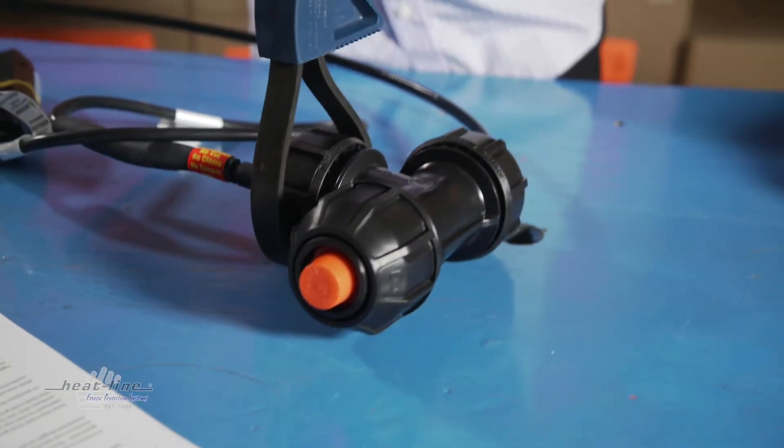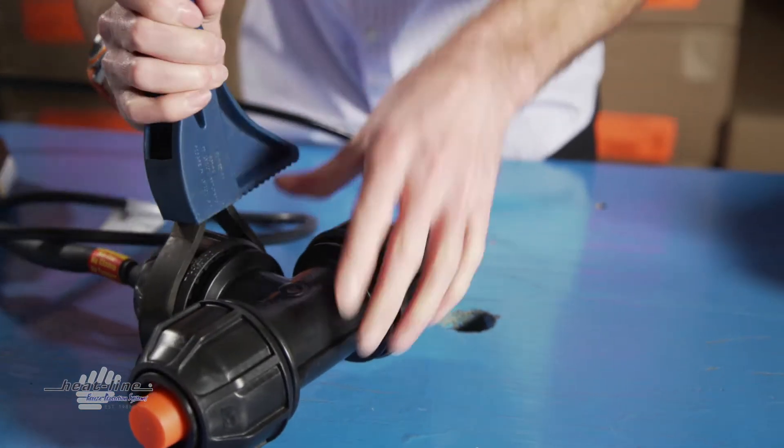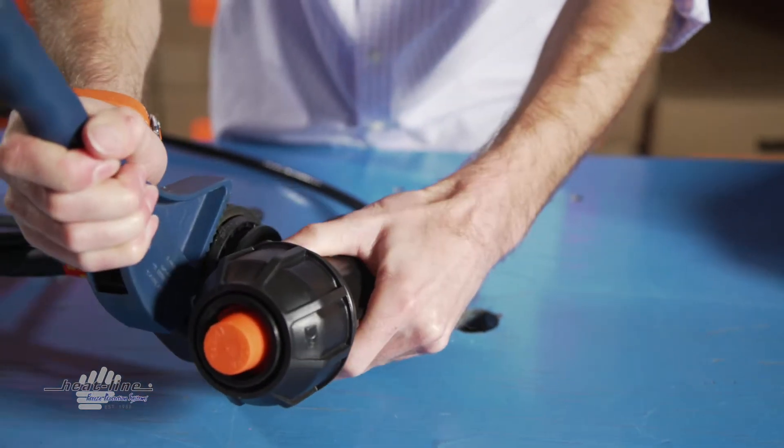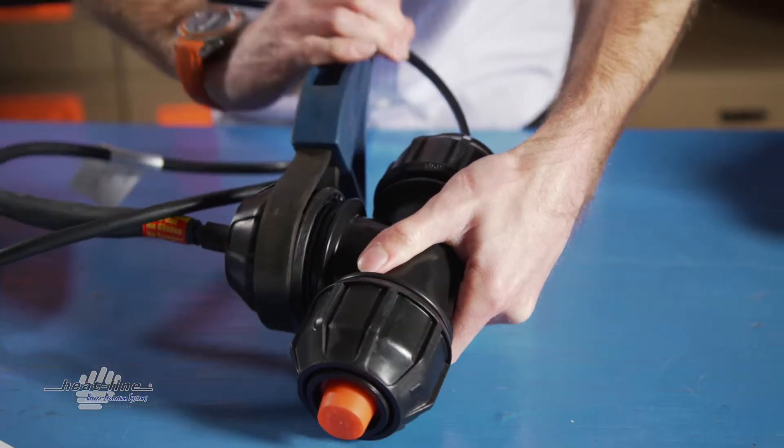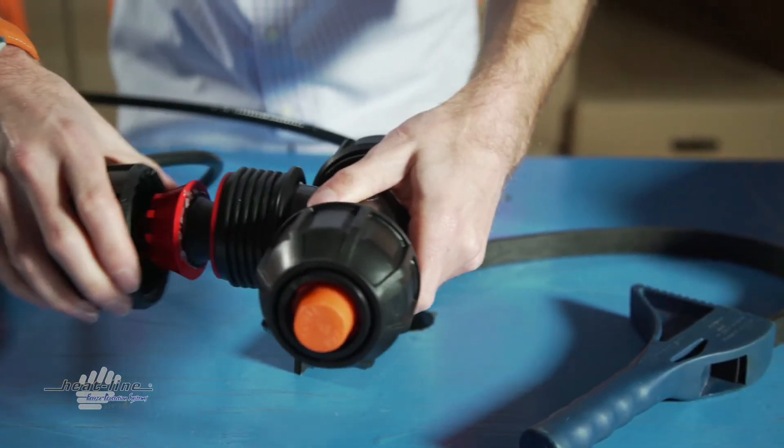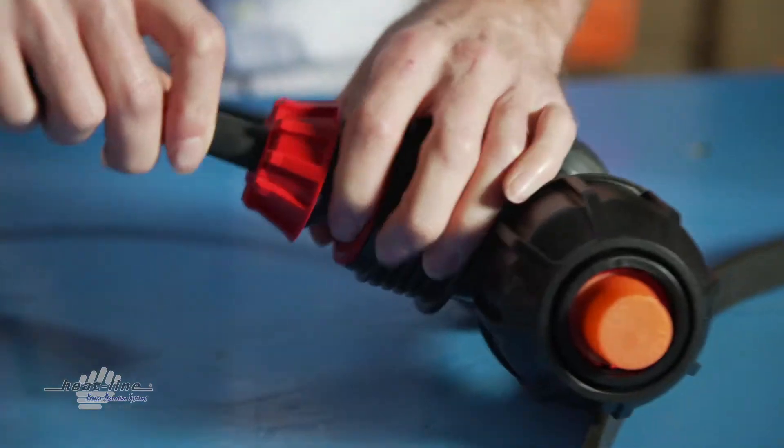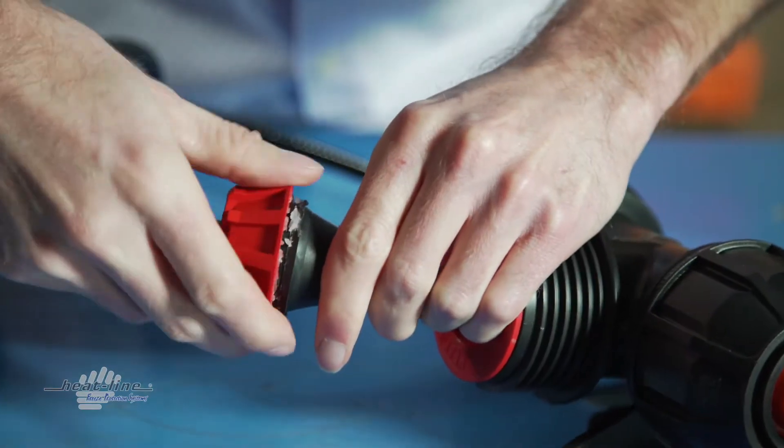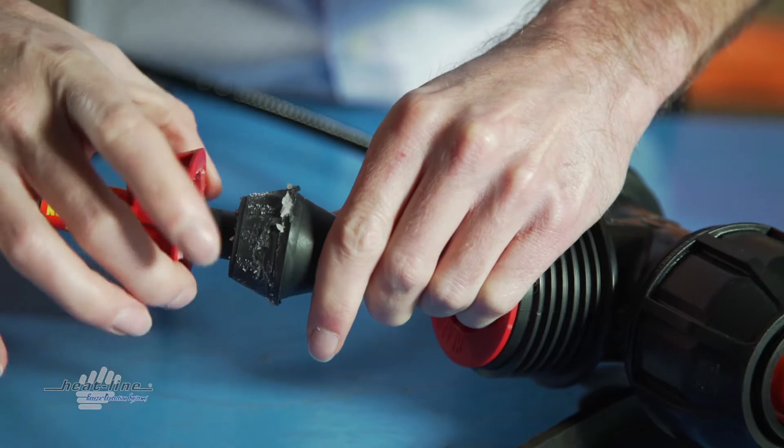Using the wrench of preference, loosen the large nut that compresses the heat line grommet. Next, pry the red reducing cone off of the heat line grommet.